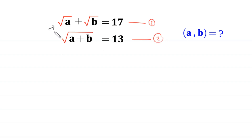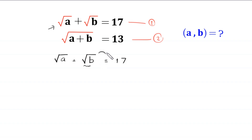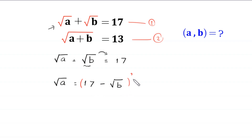Let's start with equation 1: root a plus root b is equal to 17. We move root b to the right-hand side, so this becomes root a is equal to 17 minus root b. Now we take the square of both sides.